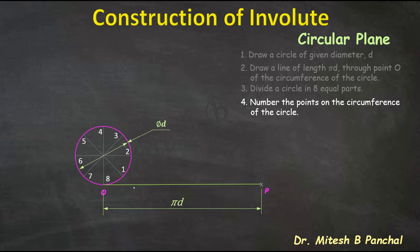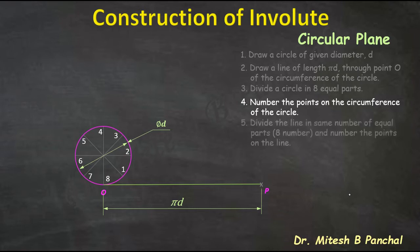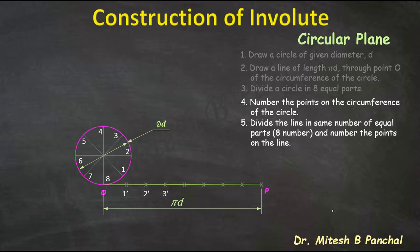Now the circumference of the circle is divided into 8 equal parts. In the same way, we have to divide the string — that is, the line O-P — into 8 equal parts. Their numbering is: 1-dash, 2-dash, 3-dash, 4-dash, 5-dash, 6-dash, 7-dash, and 8-dash, which is nothing but point P.